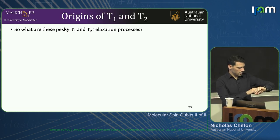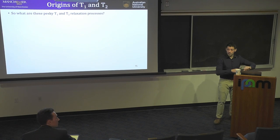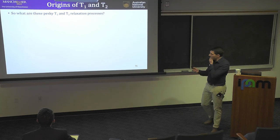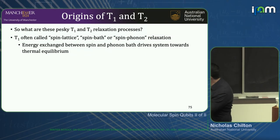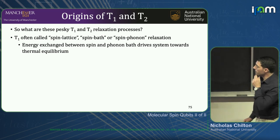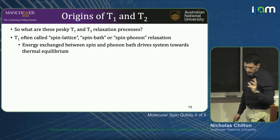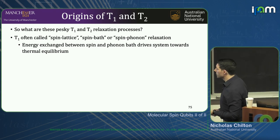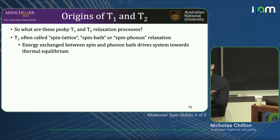T1 and T2: T1 is spin-lattice, spin-bath, spin-phonon coupling — energy exchange between the spin and the phonon bath or environment. This drives the system towards thermal equilibrium. If you want to maintain quantum coherence, you don't want this happening.